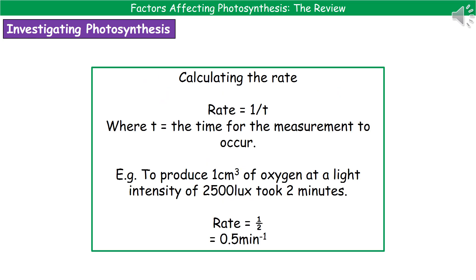One thing we need to do in order to compare how different factors affect photosynthesis and its rate is to calculate the rate. To do this, all we do is one divided by the time it takes for that measurement to occur. So if you were looking at how long it takes to produce one centimetre cubed of oxygen at different light intensities, you take the unit of time and divide one by that number. That way you can compare all the different rates for the different conditions.